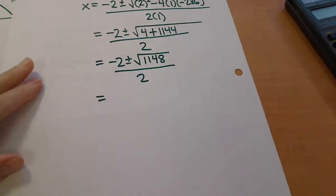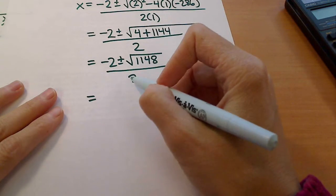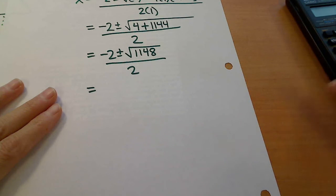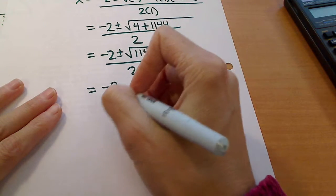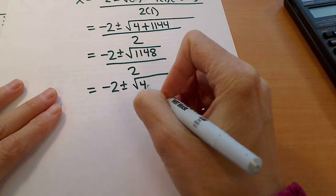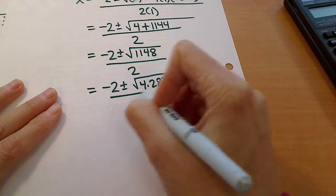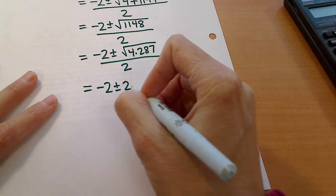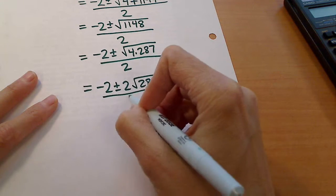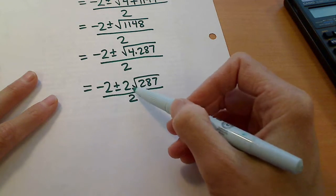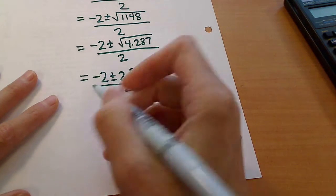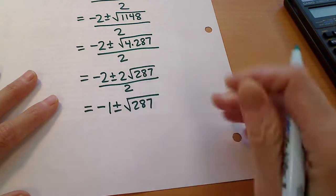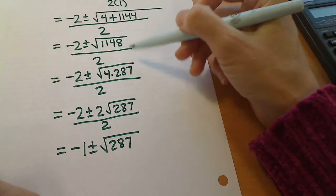The first thing I'm going to do is simplify this because I'd like to get rid of that denominator, and I do recognize that 1148 is divisible by 4, and the square root of 4 is 2, so if we rewrite it, it's actually 4 times 287. The square root of 4 is 2, so I'm going to bring that out as a 2. The reason for doing that is I recognized that then I could divide each of these by 2, and really be looking at negative 1 plus or minus the square root of 287.